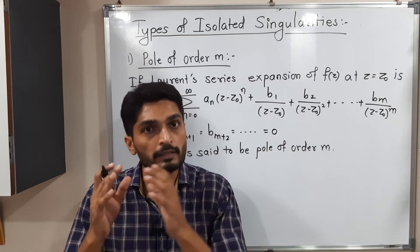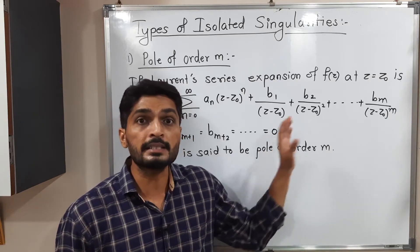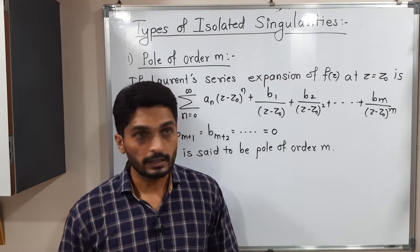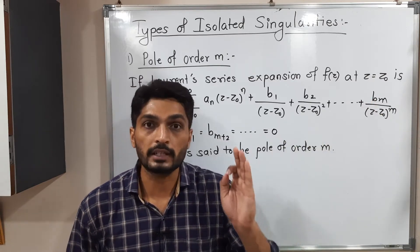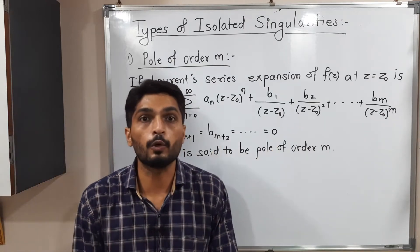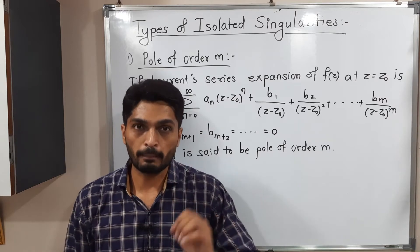So suppose any function has a Laurent series expansion at z equals z0 like this. And in the principal part, it has only finite number of terms. That means up to bₘ we have a term, and after that all remaining coefficients are zero.